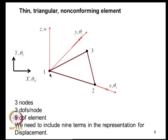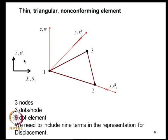We select a local coordinate system where the X-axis coincides with edge 1–2, the Y-axis is in the plane of the plate orthogonal to the X-axis, and the Z-axis is out of plane. These are local coordinates, alongside global coordinates. The variables W, θX, and θY are indicated using uppercase letters.